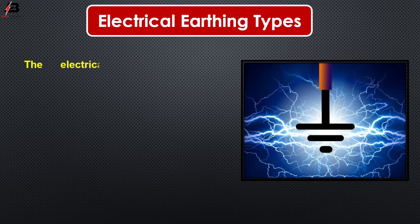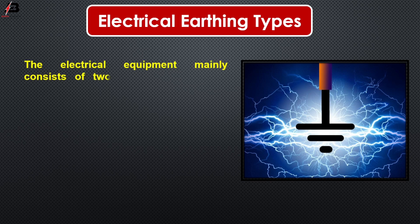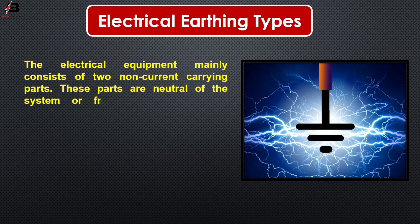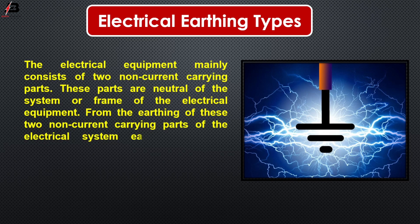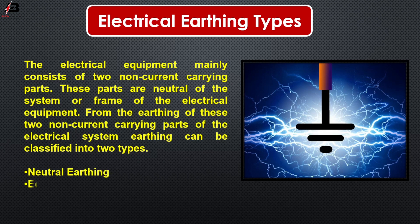Electrical earthing types: electrical equipment mainly consists of two non-current carrying parts — the neutral of the system or the frame of the electrical equipment. From the earthing of these two non-current carrying parts of the electrical system, the earthing can be classified into two types: number one, neutral earthing; number two, equipment earthing.